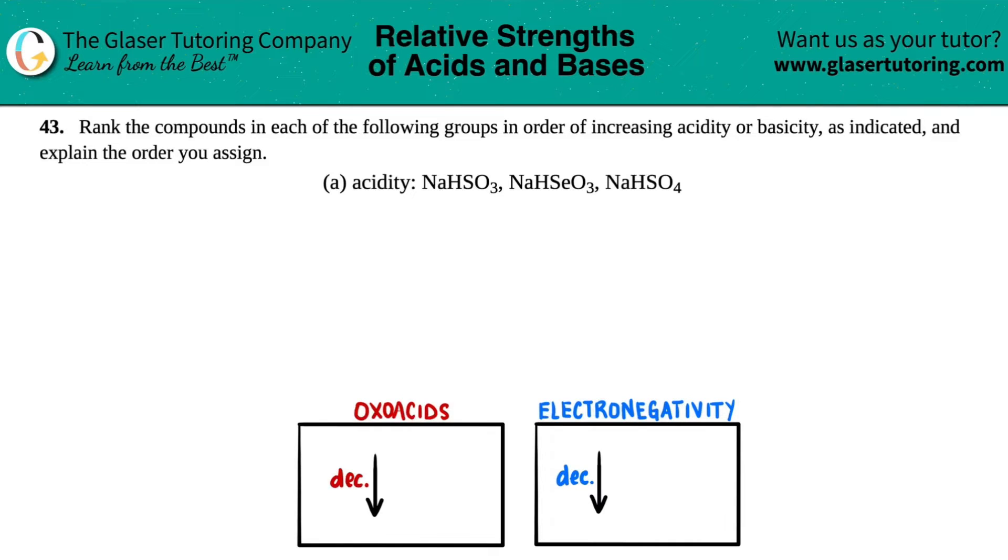Number 43: Rank the compounds in each of the following groups in order of increasing acidity or basicity as indicated and explain the order you assign. We have letter A, so in this case we have to rank in terms of increasing acidity, and they give us these three compounds: NaHSO3, NaHSeO3, and NaHSO4.